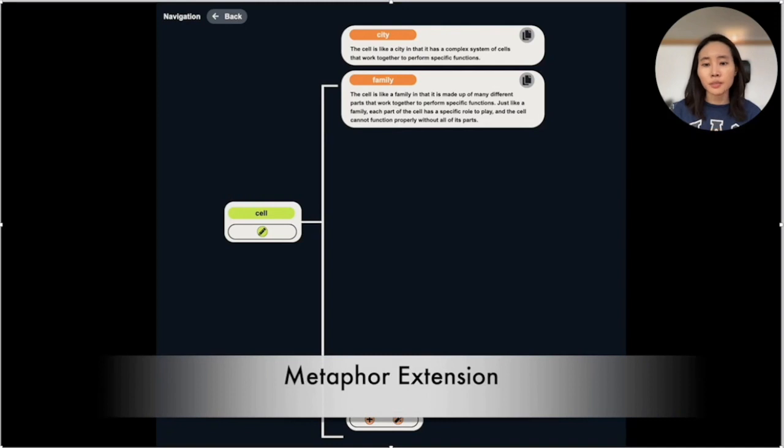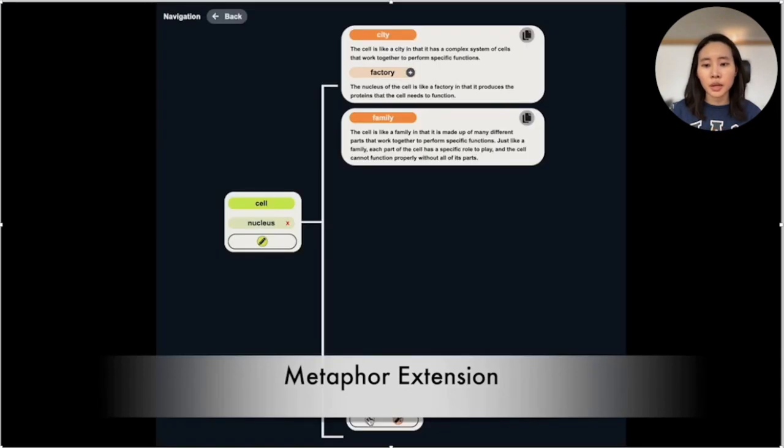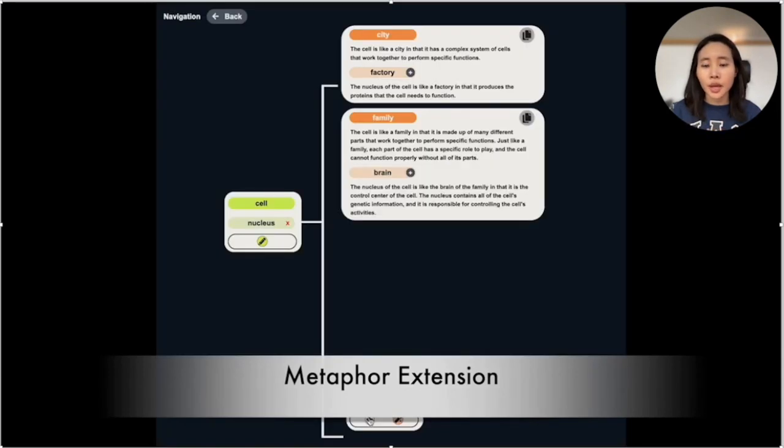After the initial exploration, users can further expand the metaphors by adding submetaphors, resolving the congruent structure. For example, after choosing city and family for cell, the subconcepts can be the nucleus, then it generates corresponding submetaphors like factory and the brain. And they can further expand the metaphors by adding another subconcept like membrane.